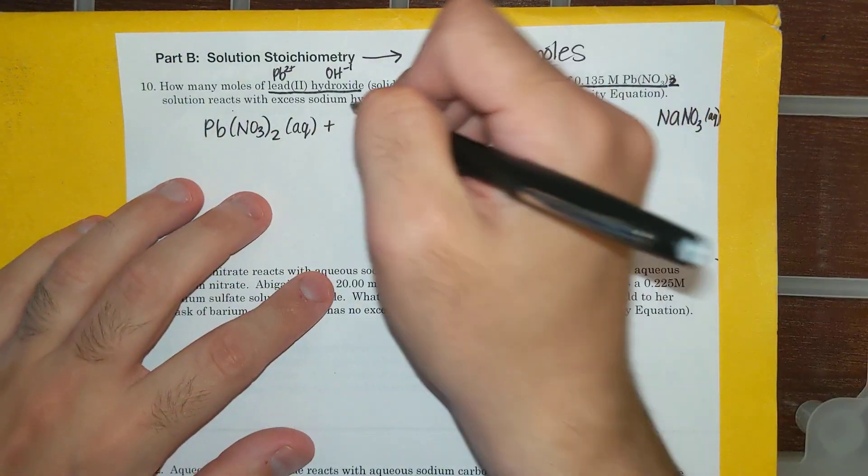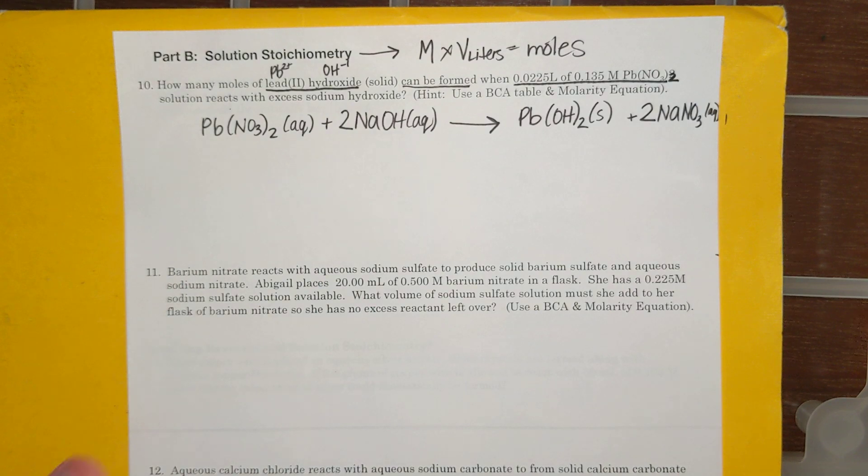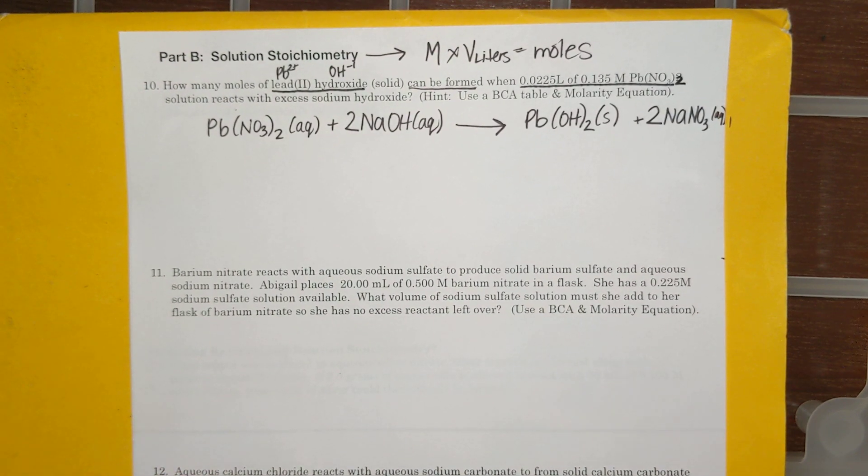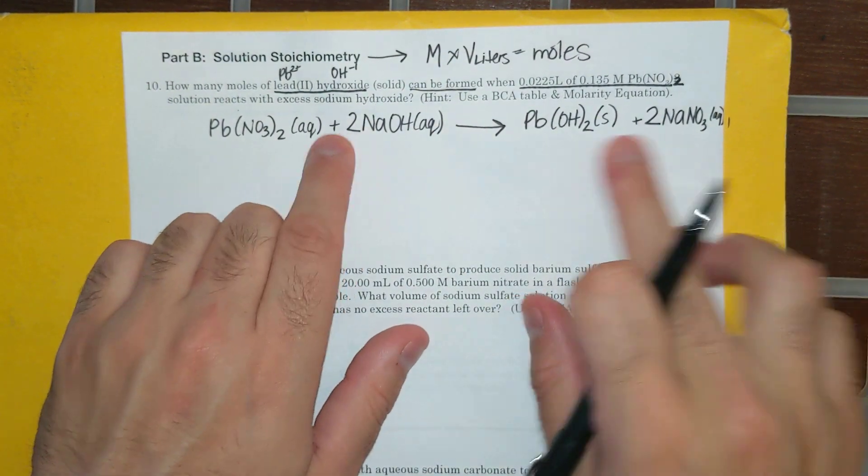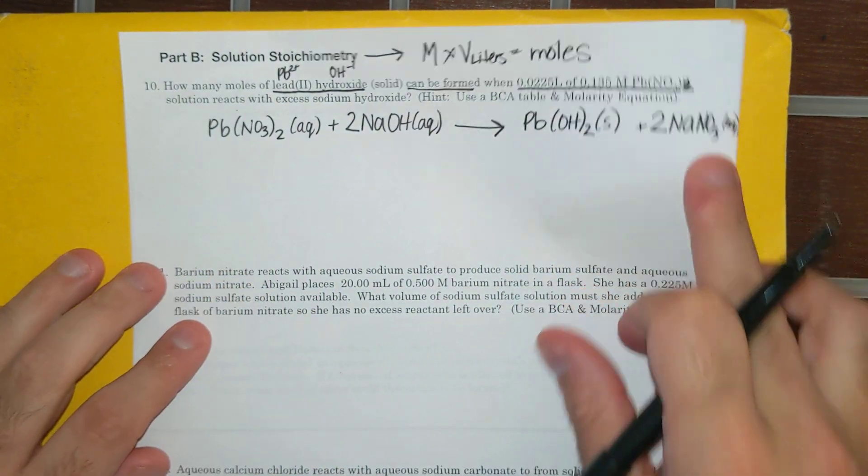And then if I want to balance this, I put a 2 here, I put a 2 here, and we are in business. Okay, so I have 2 Na's, 2 Na's, 2 OH's, 2 OH's, 2 NO3's, 2 NO3's.